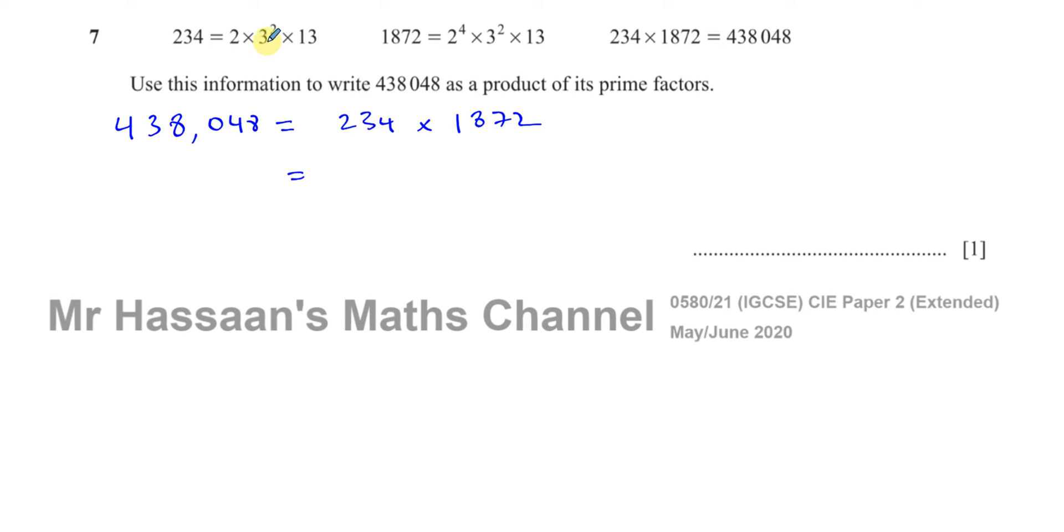234 is already given to us as a product of its prime factors, so they don't expect you to find this yourself. It says use the information given, so you don't have to express this by splitting it up. That's already given in the question. And then you've got times 1,872, which is 2 to the power of 4, times 3 to the power of 2, times 13.